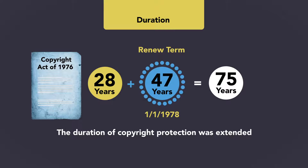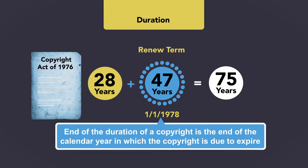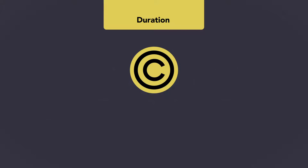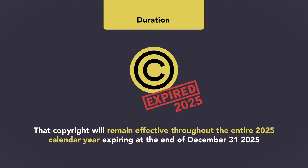Note that the end of the duration of a copyright is the end of the calendar year in which the copyright is due to expire. Thus, for example, if a copyright is to expire in 2025, it will remain effective throughout the entire 2025 calendar year, expiring at the end of December 31st, 2025.